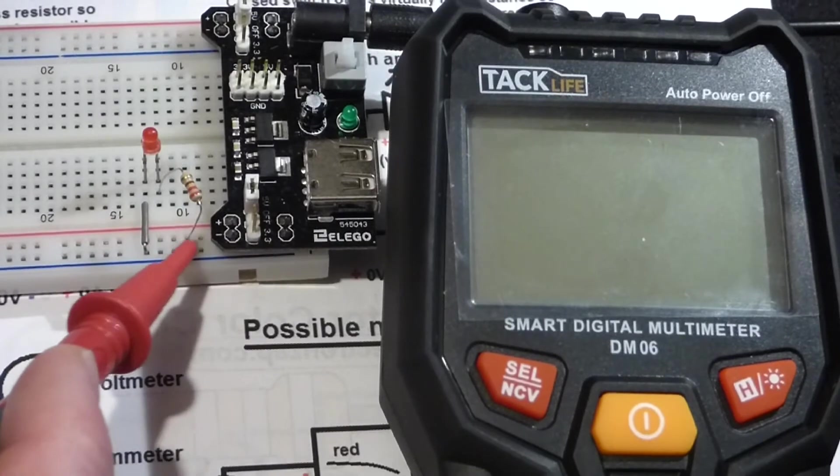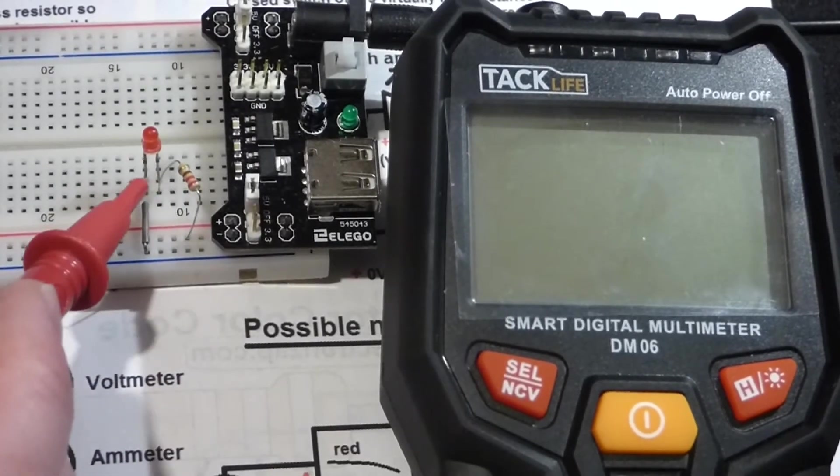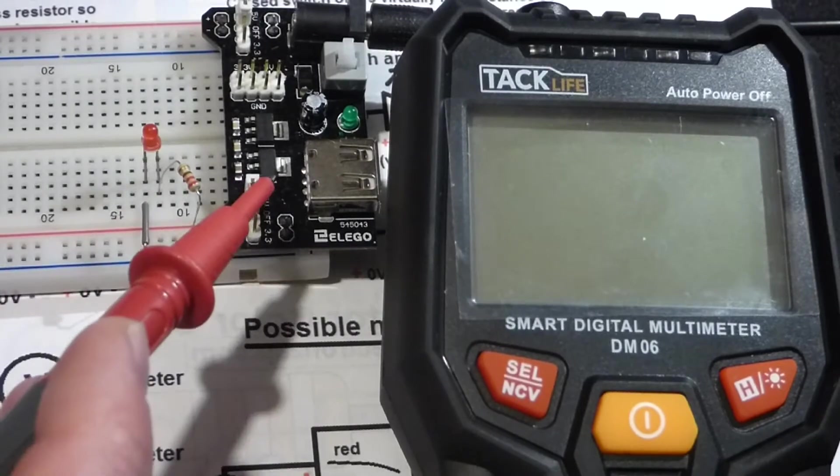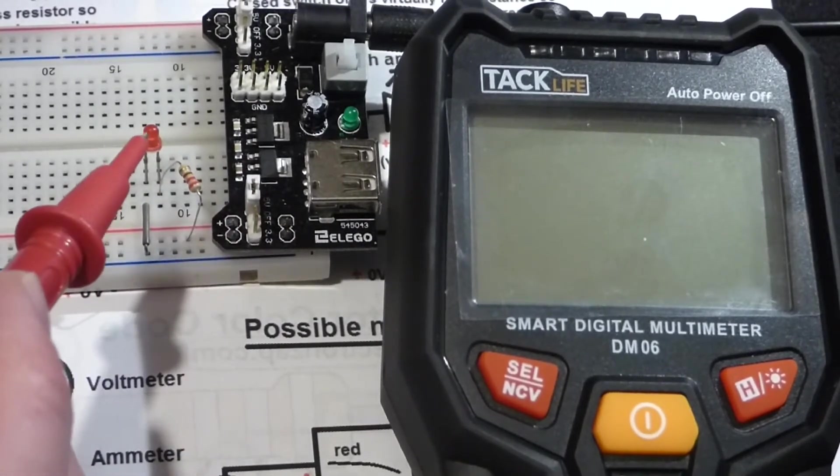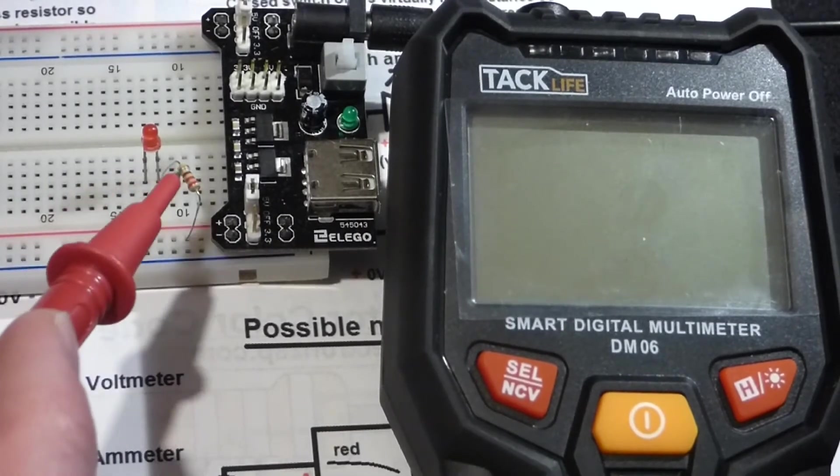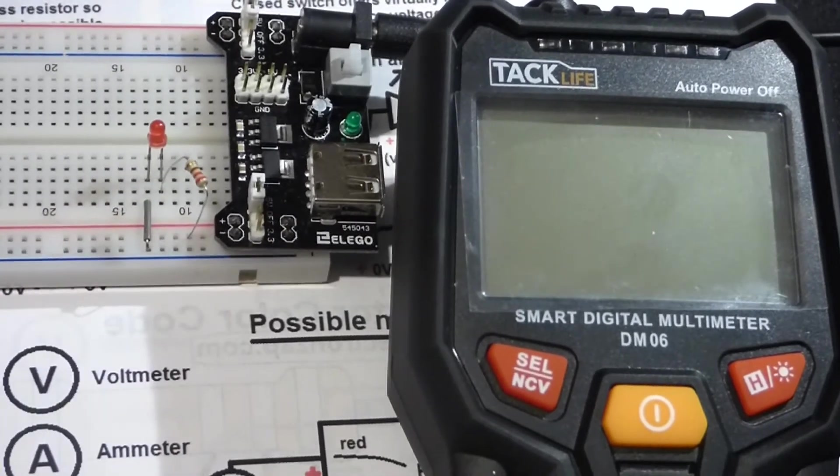Other side of the resistor is the positive rail there. Long lead is the anode, short lead's the cathode. When we apply 5 volts, that'll be enough to run current through the LED and it will light up. The resistor will limit the current.